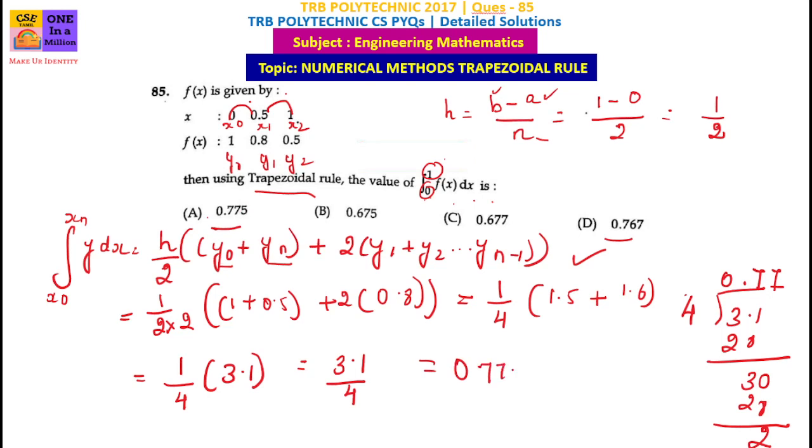So the answer is 0.775. Answer: option A, 0.775.